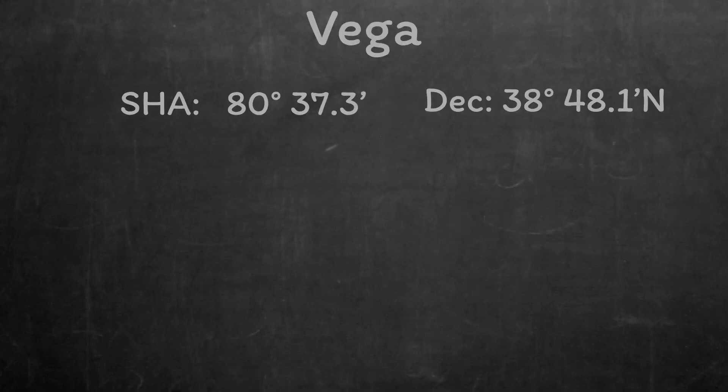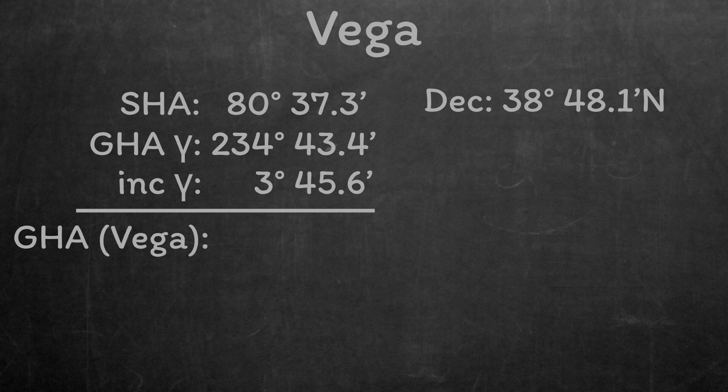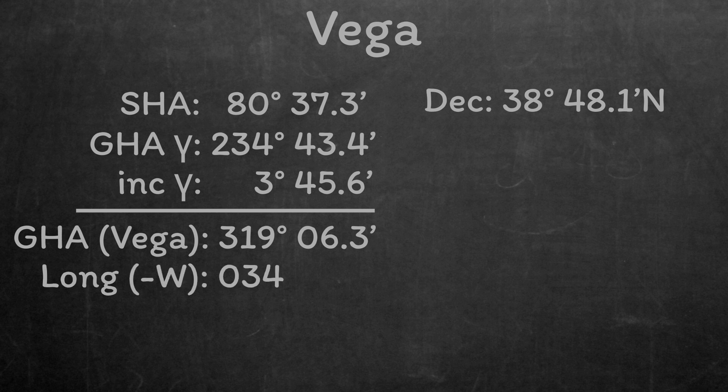Adding together the Greenwich hour angle of Aries at 8 o'clock, the increment for 15 minutes, and the sidereal hour angle of Vega, we can get a Greenwich hour angle of Vega as 319 degrees, 06.3 minutes. Finally, to turn that into the local hour angle of Vega, we need to subtract our longitude. And we're subtracting because our longitude is west.